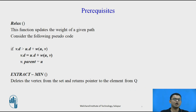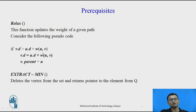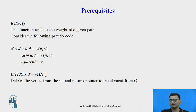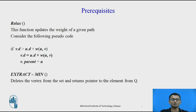Moving ahead, the prerequisite is the relaxation function. This function updates the weight of a given path. If the distance of node V is greater than the distance of node U from the source plus the weight of edge U to V, then we update it, and the parent of V becomes U. That means the source from which the shortest route arrives at node V is U.